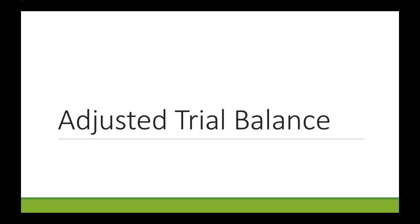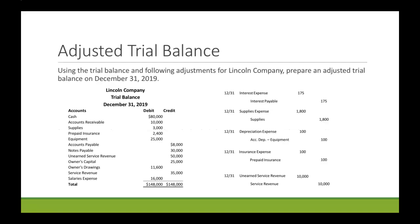Let's work through an example where we prepare an adjusted trial balance. We're told using the trial balance and the following adjustments — the following adjusting entries for Link and Company — we need to prepare an adjusted trial balance on December 31st, 2019. We have the trial balance over on the left side and then our five adjusting entries over on the right, so we can use that information to figure out what we would need to show on an adjusted trial balance.